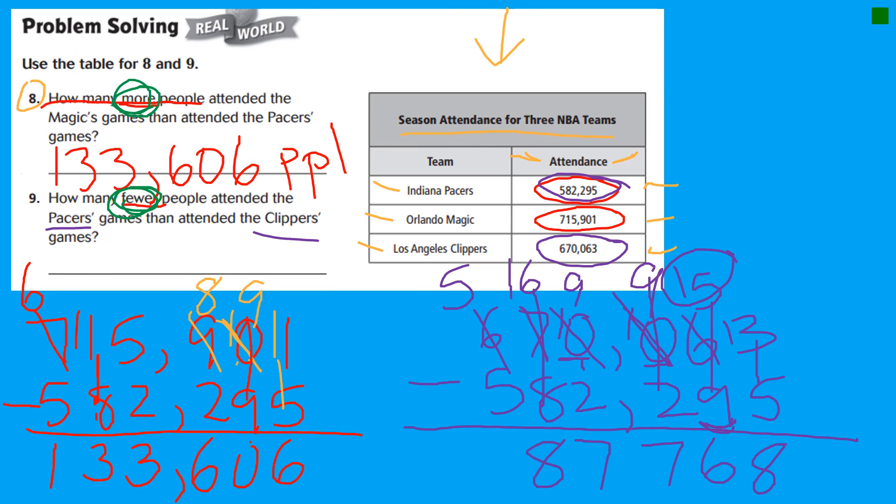And then five minus five. Boys and girls, don't put a zero right there. Just leave it. Do not put a zero there. So the, how many fewer people attended the Pacers game? Eighty-seven thousand, seven hundred, sixty-eight people. It's the difference between the two games. Attendance.